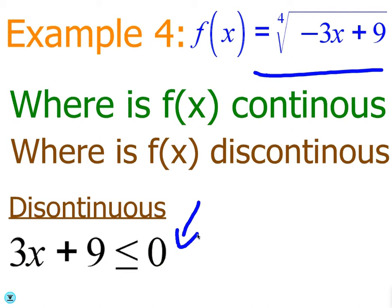In fact, you could just set it equal to zero, really, because that's the only point where the graph actually exists. Let's change that. Negative 3x plus 9 is less than or equal to zero.